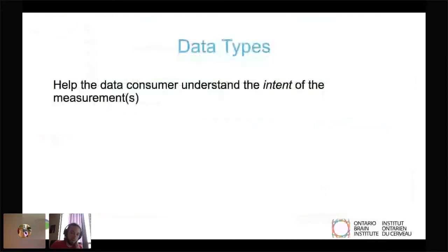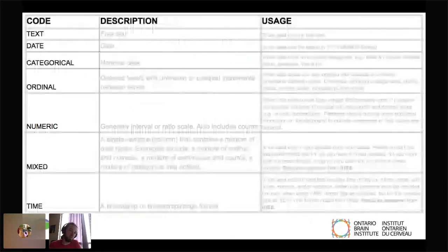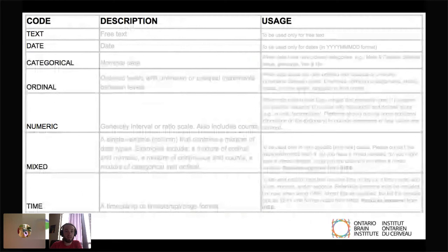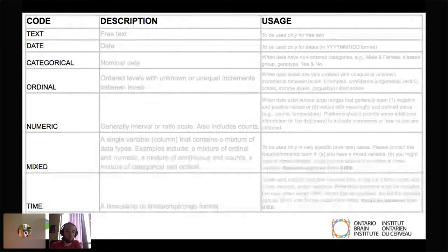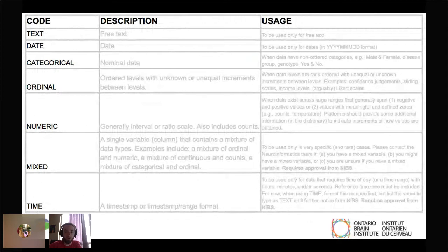We also require data types as part of the data dictionary. This will help data consumers understand the intent of the measurement. As curators, we know what they're supposed to be and what they're supposed to measure, but this isn't always familiar to every type of data consumer once they get access to the data. We have a small list that we define in the project, including text and categorical, ordinal, numeric, even mixed data. So when something changes from, say, decimals to a greater than or less than, we needed to accommodate for that.